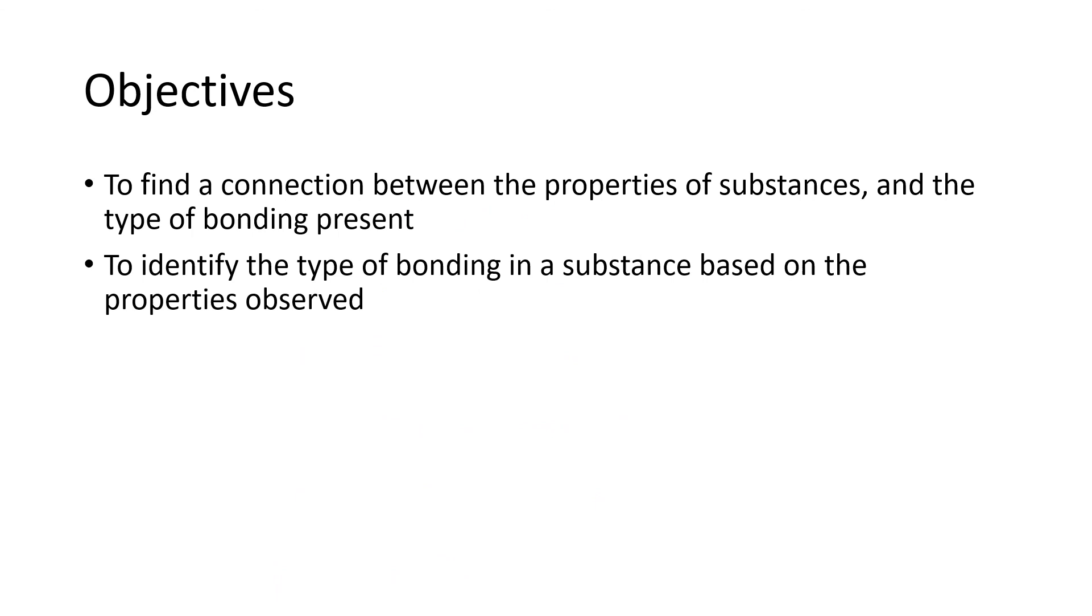Our objectives for this section were to connect properties of a substance with its type of bonding, ionic or covalent, and even to identify the type of bonding based on the properties that are observed.